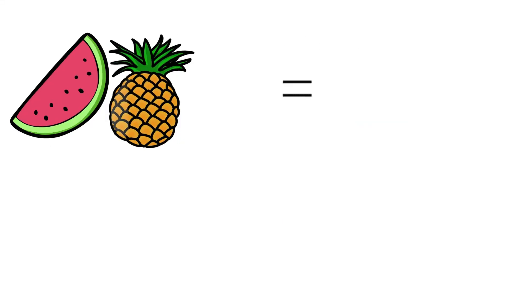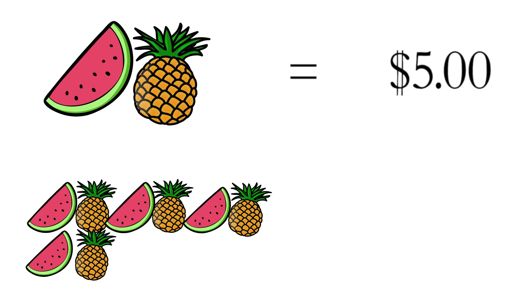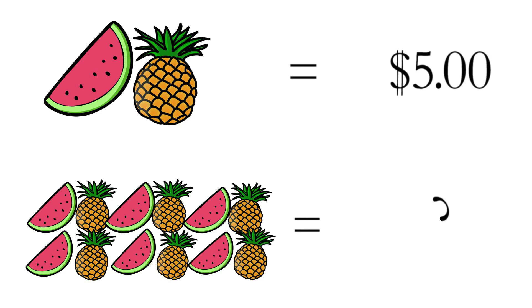For example, if you have two pieces of fruit for five dollars, you might want to know how much 12 pieces of fruit will cost. Too often kids set up the proportion and then cross-multiply, and they have no instinct about what they're really doing, why it works, or whether their answer is sensible.